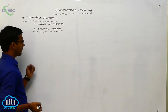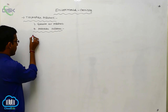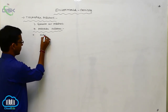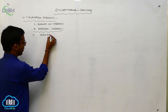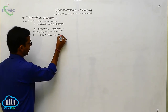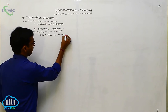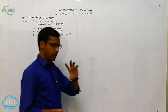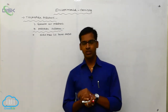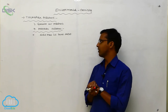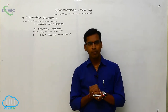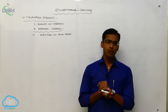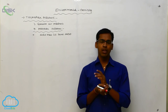Today we discuss particulate pollutants. The particulate pollutants exist as particles in a solid state or as liquid droplets. These particulates are further divided into viable particulates and non-viable particulates.